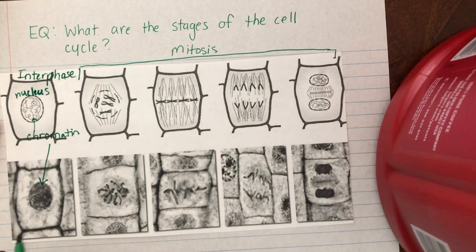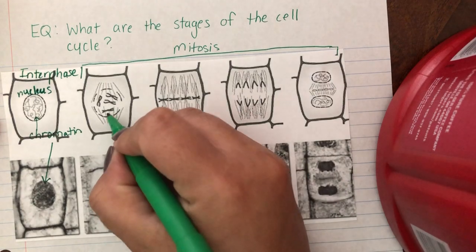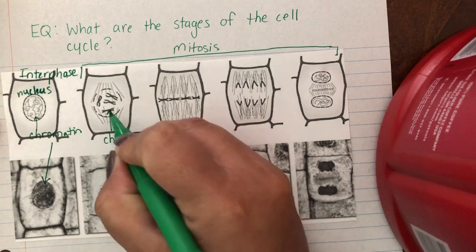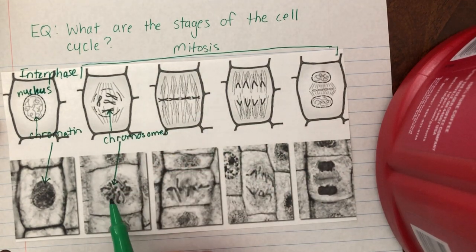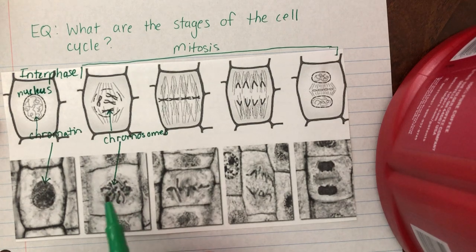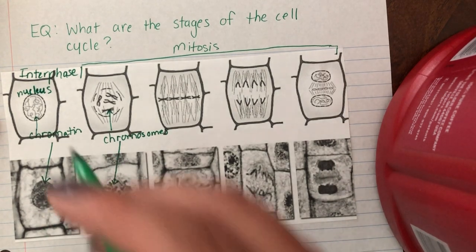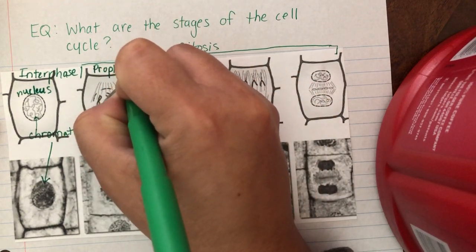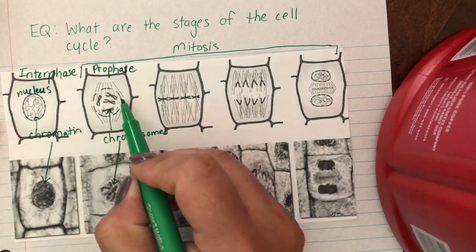When it enters mitosis, it's a little more obvious what's happening. For example, in this first one you finally see the chromosomes that are formed. They look like this X-shaped, and here you see them. They're not as perfect, they look more like squiggly worms, but you can definitely tell the difference between this image and this one. This first stage is called prophase.